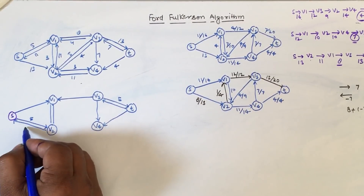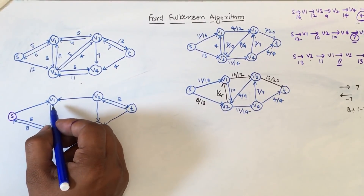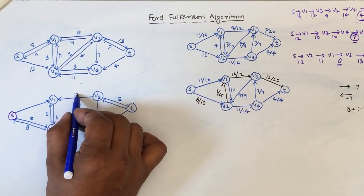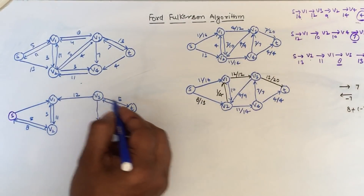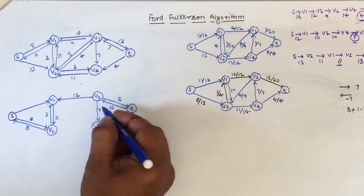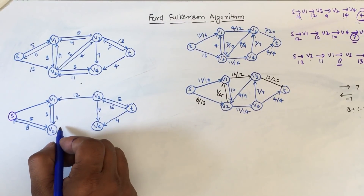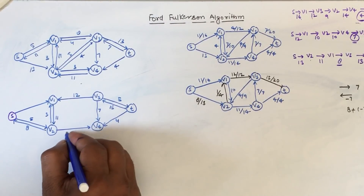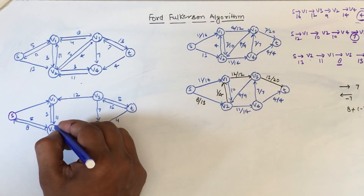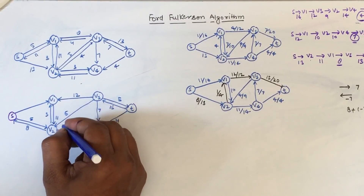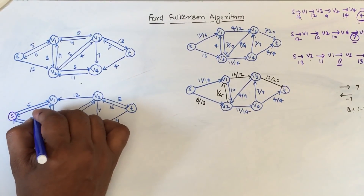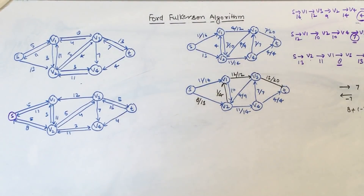The residual capacity from s to v2 is 5 in forward and 3 in reverse. We have used all capacity from v1 to v3. From v3 to t, we have 5 remaining capacity and 15 already taken. From v2 to v4, there is 3 in the forward direction and 11 in reverse. In the v3 to v2 direction there is 4, and 5 in the other direction. We also have 5 and 11 in another section. This completes the residual graph.